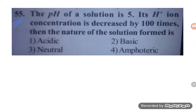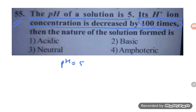Let us try to solve problem number 55. The pH of a solution is 5. The hydrogen ion concentration is decreased by 100 times. We need to find the new pH and the nature of the solution.